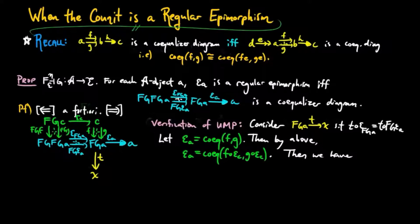Then we have T G epsilon C is equal to T epsilon FGA FGG by naturality of epsilon. And this is equal to T FG epsilon A FGG by assumption on the morphism T above.